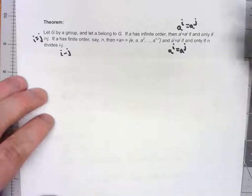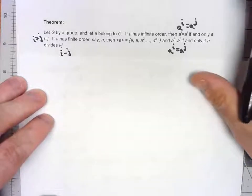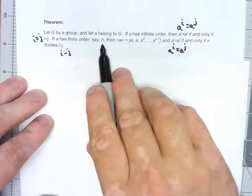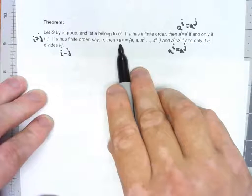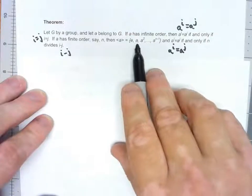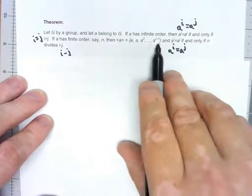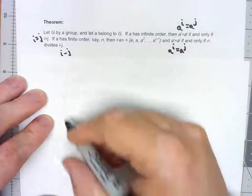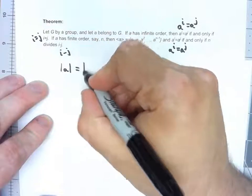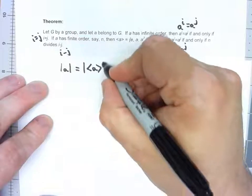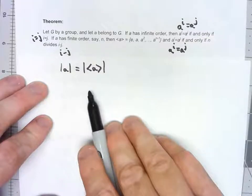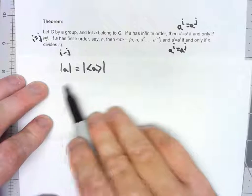Let's talk about a few important consequences of this theorem. The first one is very simple. Notice that if A has order n, then the subgroup generated by A has n elements — we have E and then A to the first up to A to the n minus 1. So the order of element A must equal the order of the subgroup generated by A. That actually justifies why we use the absolute value notation for both types of order.